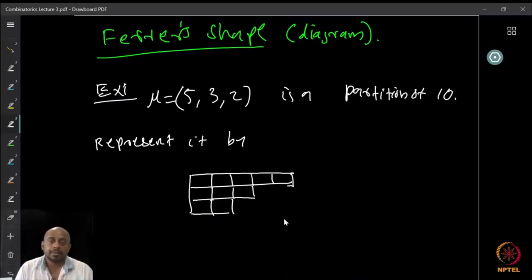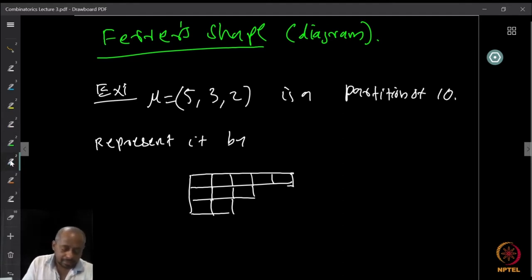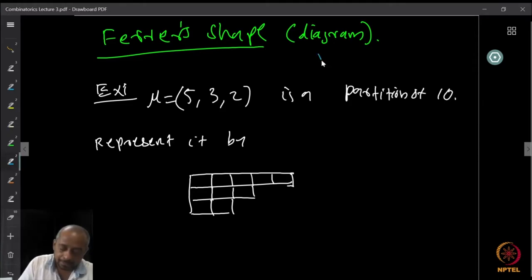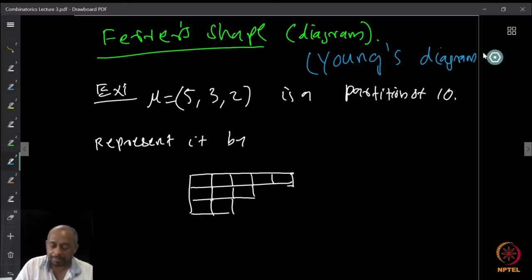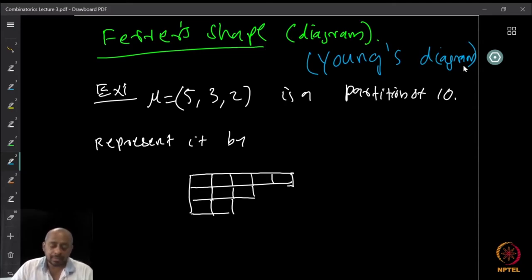So what is our new idea? We want to look at partitions in a different way. For that, there is a diagrammatic representation of a partition of an integer called the Ferrers diagram, or Ferrers shape. This is also called Young's diagram. In many books you will see only Young's diagram because Young has done much more work. We will look at Young's tableau — standard Young tableau, non-standard Young tableau, weak tableau — in future lectures. But for now, we look at what is called the Ferrers shape or Young's diagram.